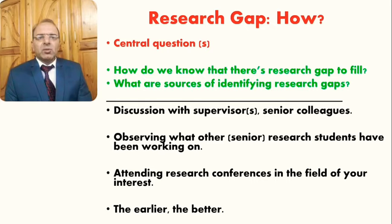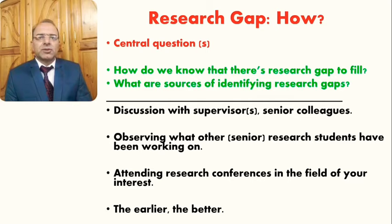Observing what other senior research students have been working on is also especially important for regular research students. This is a very important way of finding and thinking about areas that are important or that senior research students have been exploring. There might be certain aspects they have been working on, and you could think of other aspects of those particular topics that they have already been exploring.